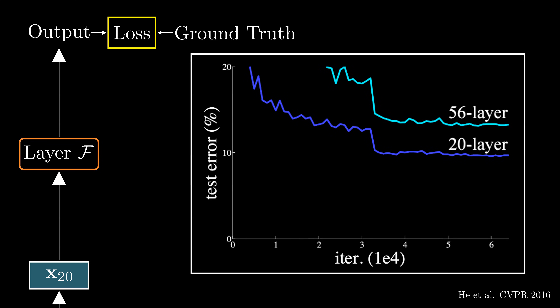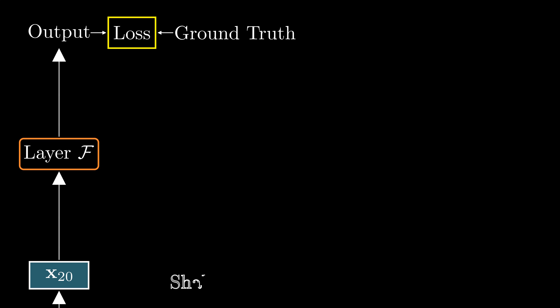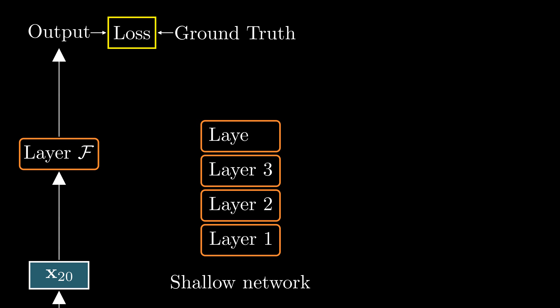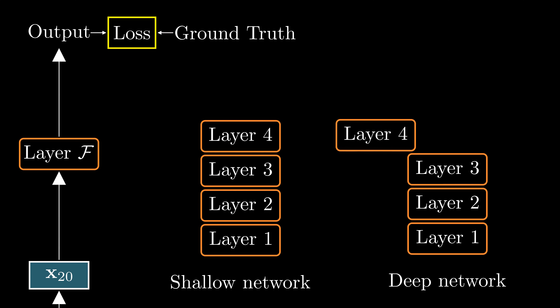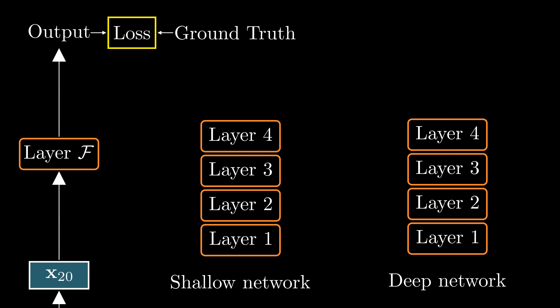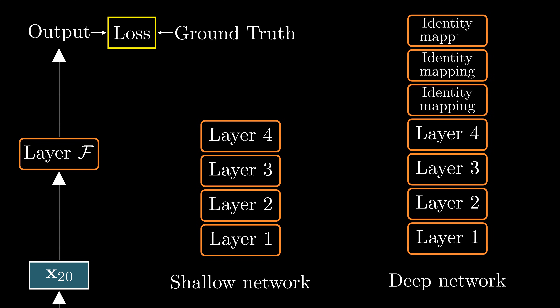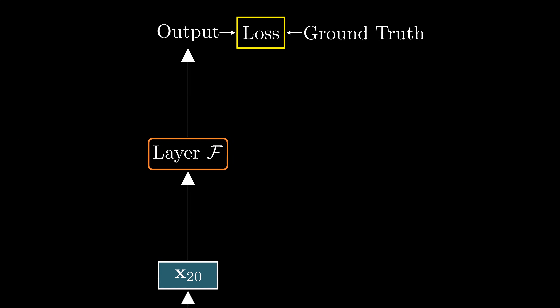This is counterintuitive. For example, we could construct a deeper model that performs at least as well as the shallow one by simply duplicating the layers from the shallow network and using additional layers to perform the identity mapping. So we know the solution exists — it's just that the optimization is difficult.